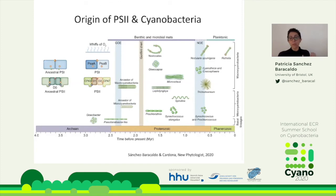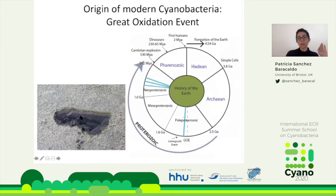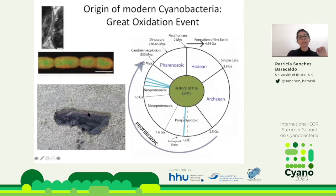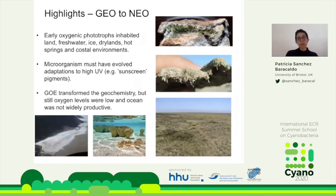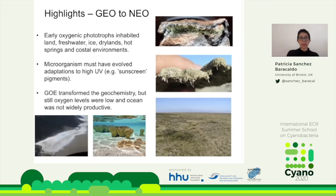This is consistent with the fossil record — it's nice to see different types of evidence being consistent with each other. During this time period we have microbial mats, and the filamentous forms enabling formation of those microbial mats would have been quite predominant during the Proterozoic. Around the Great Oxygenation Event, these early oxygenic phototrophs likely evolved in freshwater environments and then moved into marine environments, with radiation into all sorts of land environments. These early organisms also likely needed adaptation to high UV — in fact, some cyanobacteria have sunscreen pigments.